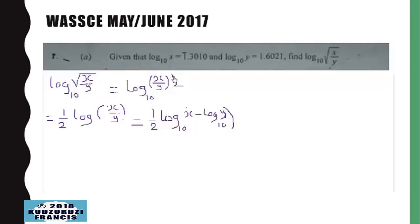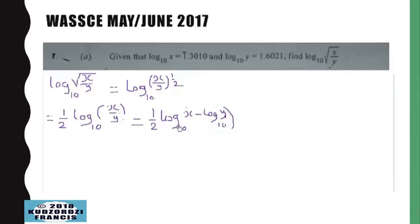The square root of x over y can be rewritten as a power of one over two. We apply the law that if we have a number to an exponent, the exponent comes to multiply. Then we apply the law of logarithm again — if the numbers are dividing, we share the base and subtract.